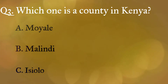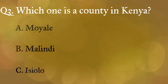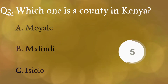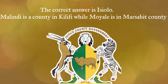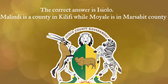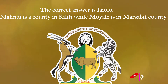Question 3: Which one is a county in Kenya? A: Moyale, B: Malindi, C: Isiolo. The correct answer is Isiolo. Malindi is a town in Kilifi county, while Moyale is in Marsabit county.